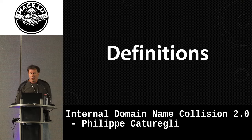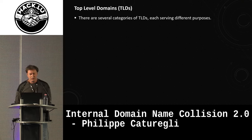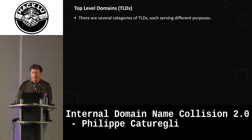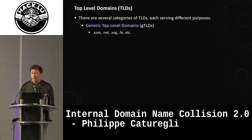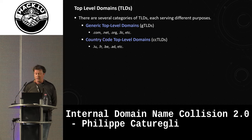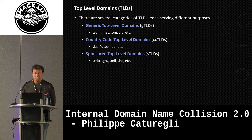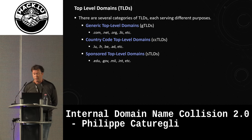Some definitions before we dive into the cool stuff. The .llc extension is actually called a top-level domain. ICANN manages the assignment of these TLDs, and there are several categories: generic TLDs, which are the most common and generally open for anyone to register; country code TLDs, typically two letters assigned to countries and sovereign states; and sponsored top-level domains like .edu, .gov, .mil, and .int, which are more restricted for registration.